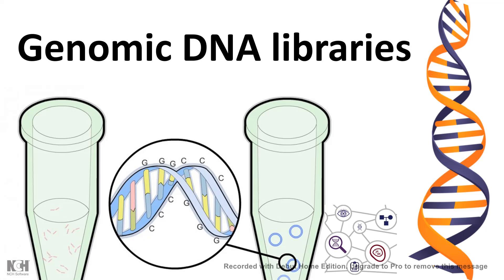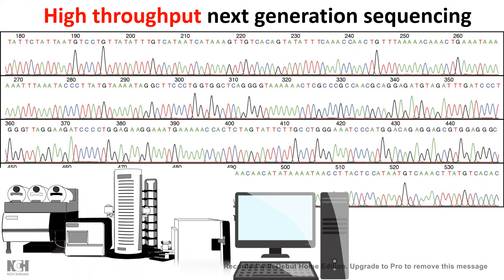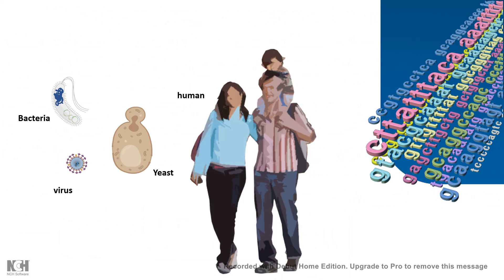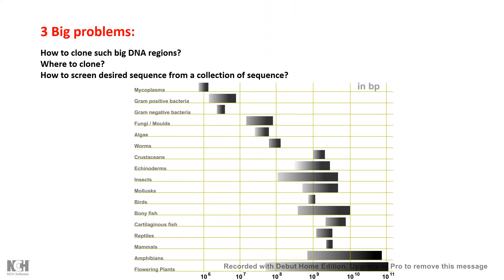These days it is a high-throughput sequencing era where in a fraction of seconds to minutes we can sequence a full genome. But let me take you back to the far 70s, where sequencing was not so developed but people were eager to sequence the genome of yeast, bacteria, virus, and even human. There was a huge challenge because a mammalian genome would be on the order of 10 to the power of 9 base pairs.